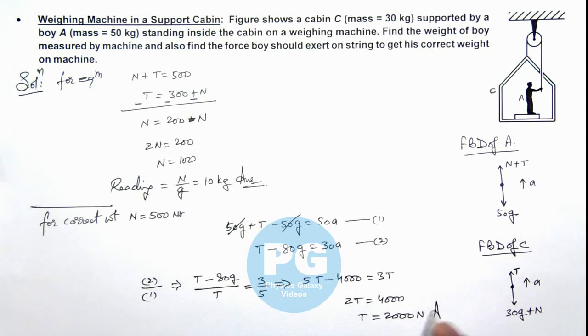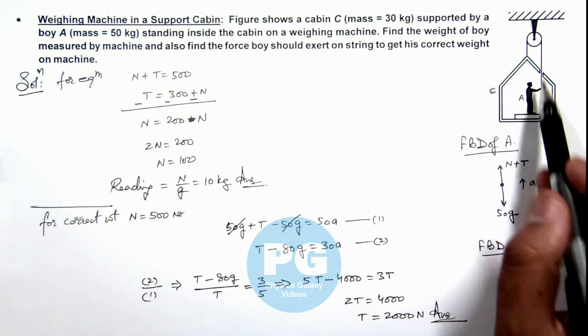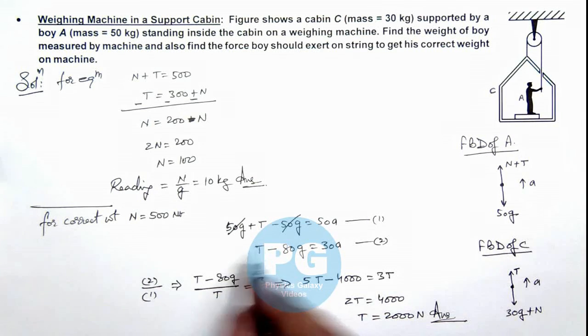The value of tension is 2000 newton, which is another result of this problem - the force which when the boy exerts on the string, the whole system will accelerate up such that the value of normal reaction will be 50g or 500 newton.